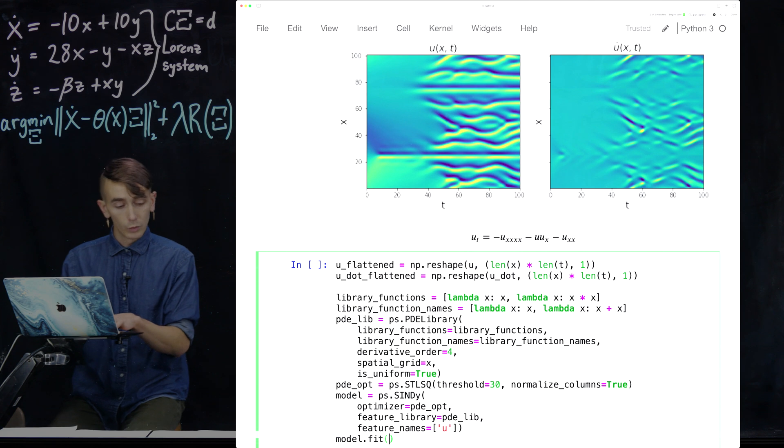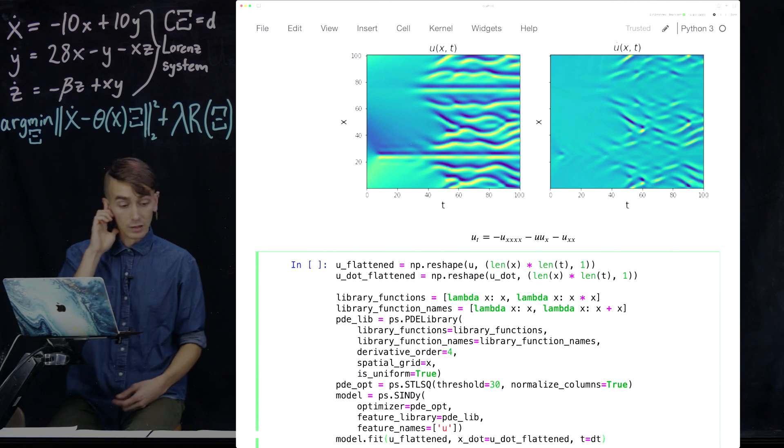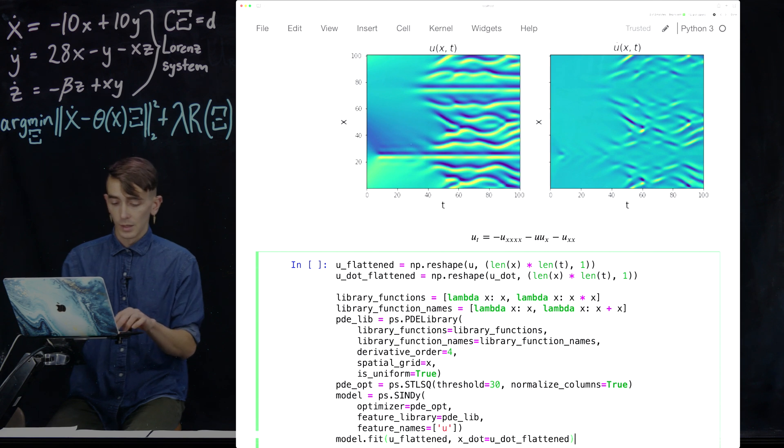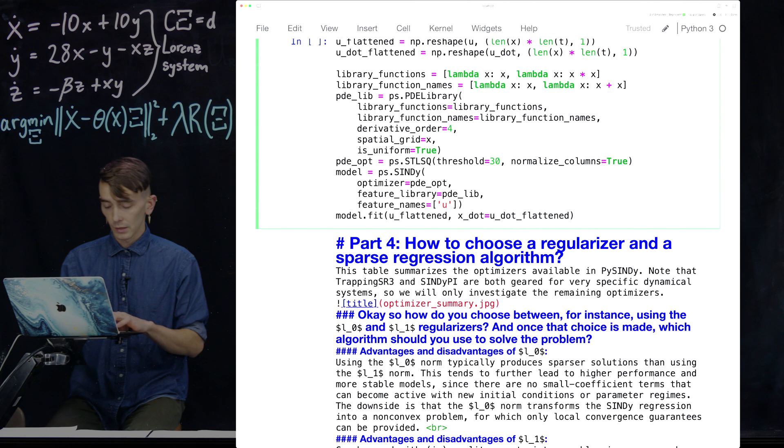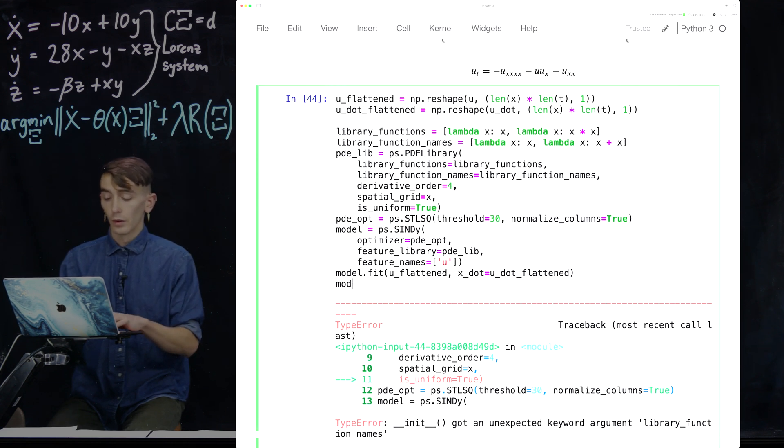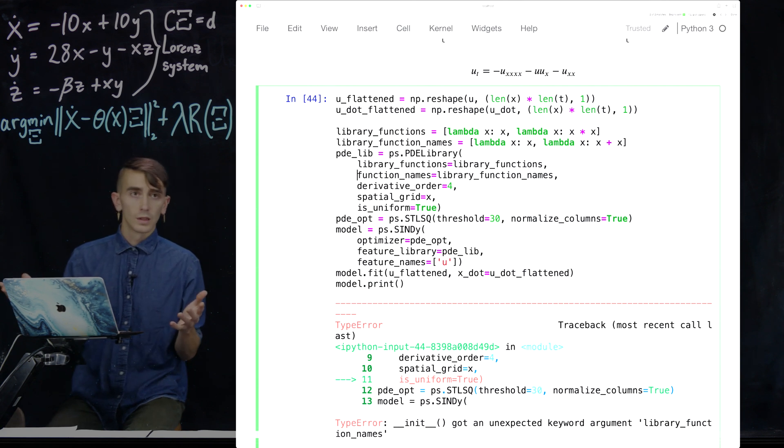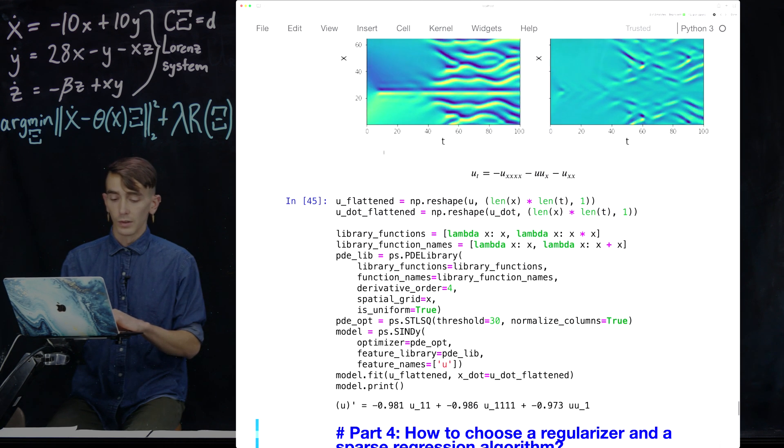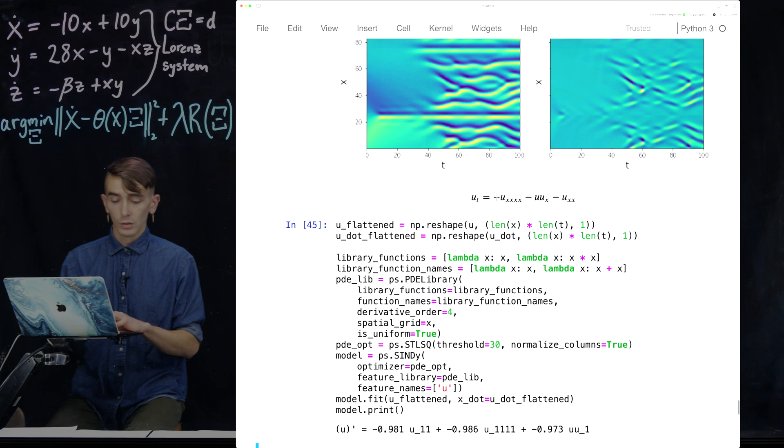Now, one other change here is when we call model.fit, we need to pass the flattened vector u. And same thing with what we used to call x dot. We need to pass the flattened u dot vector. And same thing, pass the, well, okay, actually, we don't need to pass the time step here. Sorry about that. Where did my mouse go? Okay. Sorry, we want to do model dot print. Okay. So I probably spelled something wrong. Yes. So this should just be function names. It's called function names in the class. But now we can fit.